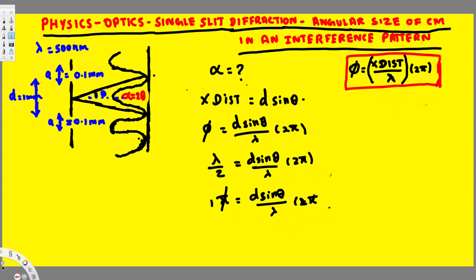From this one we can cancel this pi and we can move this lambda to the other side. So lambda is equal to d sine theta.